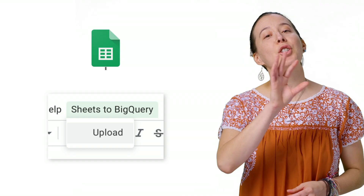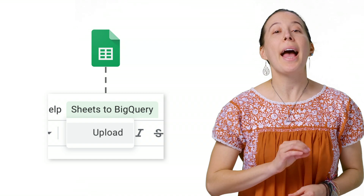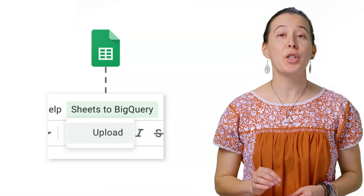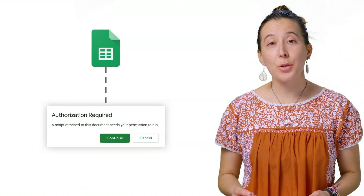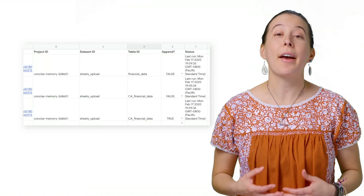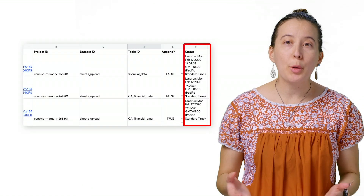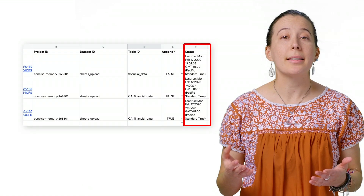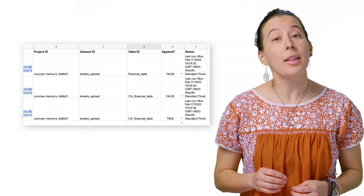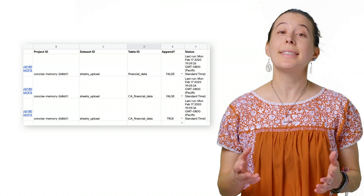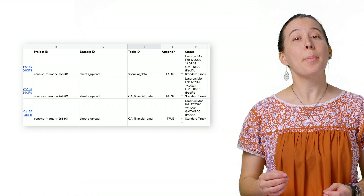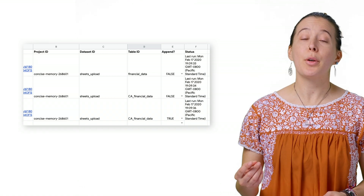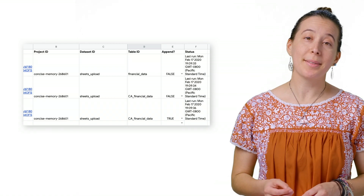Next, locate the Sheets to BigQuery menu at the top of your sheet and select Upload. You will be asked to authorize your script. And after a few seconds, the upload will be complete. Column F of your sheet, called Status, will be populated with the timestamp of the upload for verification purposes.